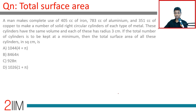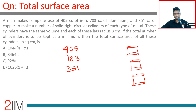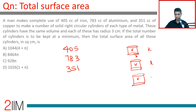A man makes complete use of 405 cubic centimeters of iron, 783 cubic centimeters of aluminium, and 351 cubic centimeters of copper to make a number of solid right circular cylinders of each type of metal. He makes some iron, some aluminium, and some copper cylinders. These cylinders are all the same volume, each with a radius of three centimeters. The total number of cylinders is to be kept at a minimum. Suppose there are k iron, l aluminium, and m copper cylinders.